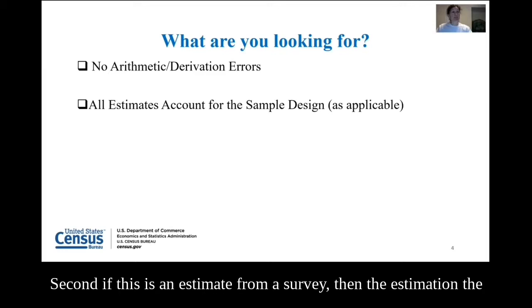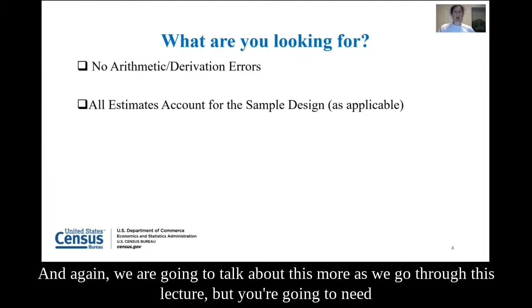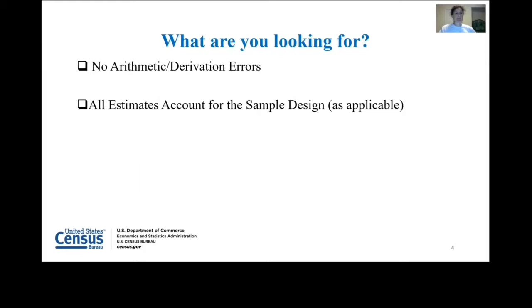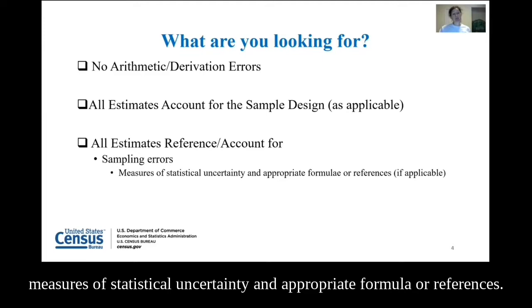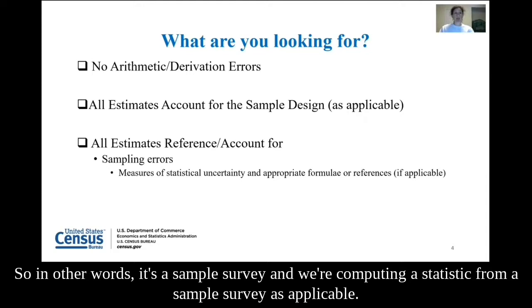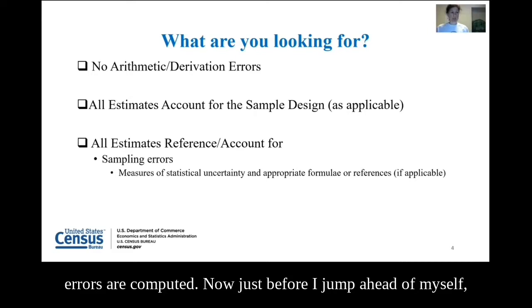Second, if this is an estimate from a survey, then the estimation and statistical methods need to account for the sample design as applicable. You're going to need to account for the sample design if you're estimating from a sample. Finally, do the estimates reference or account for sampling errors? Are we providing measures of statistical uncertainty and appropriate formulae or references? If it's a sample survey and we're computing a statistic, as applicable we need to show that a point estimate has uncertainty due to sampling error, and we need to talk about how those sampling errors are computed.